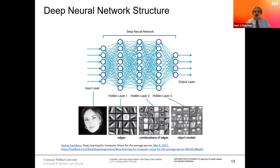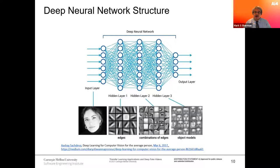The first hidden layer looks for edges — certain combinations of input pixel values indicate an edge has been found. The next layer combines edges and says 'this looks like an eye' or 'this looks like a mouth.' The third layer constructs a face — is it a face with a mustache, is it bald, is it a woman's face? The final layer then says 'this is a picture of Billy' or 'this is a picture of Sally,' based on weighted values from the previous hidden layer.